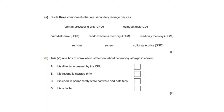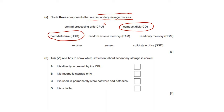Circle three components that are secondary storage devices — devices not directly accessed by the CPU. CPU is not a storage device. CD is a secondary storage device. Hard disk is also a secondary storage device. RAM is primary storage. ROM is also primary storage. Register is primary storage inside the CPU. Sensor is an input device. Solid state storage is also a secondary storage device — so CD, hard disk, and solid state storage are the three correct options.